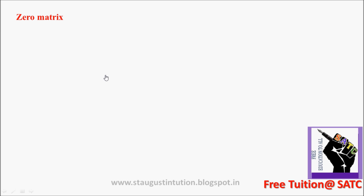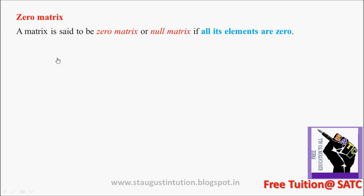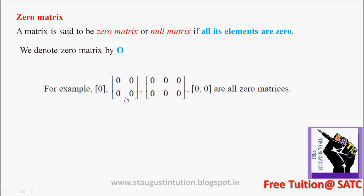Zero Matrix or Null Matrix: A matrix is said to be a zero matrix or null matrix if all its elements are 0. We denote the zero matrix by O. This matrix with all elements as 0 is known as the zero matrix.